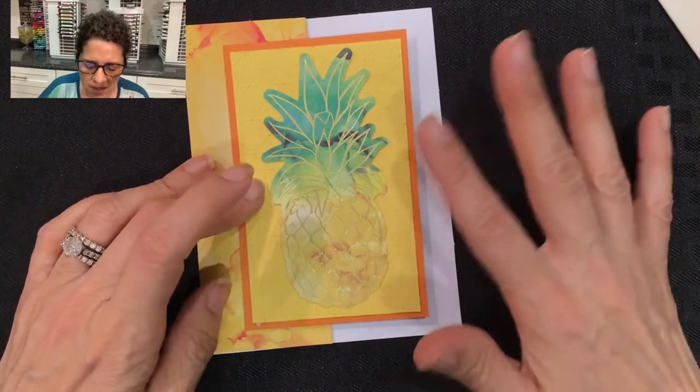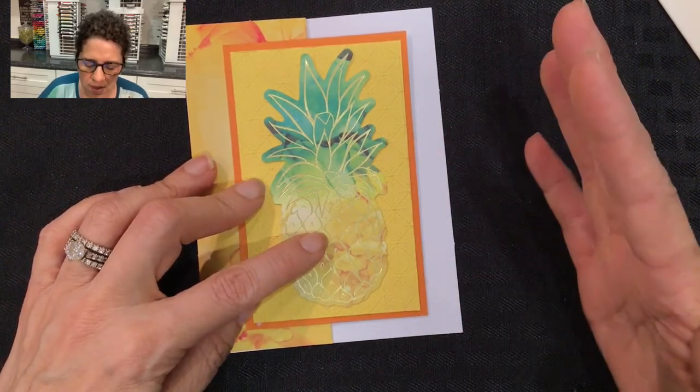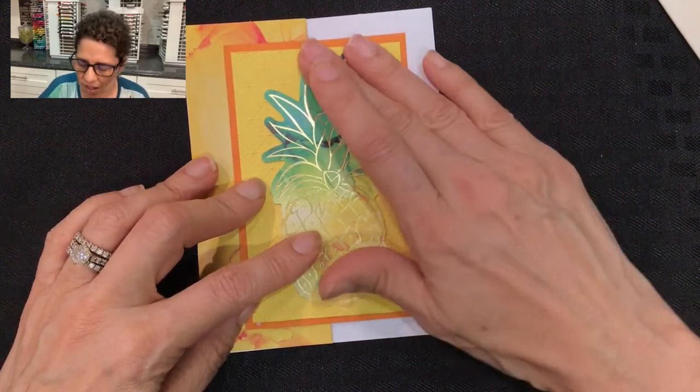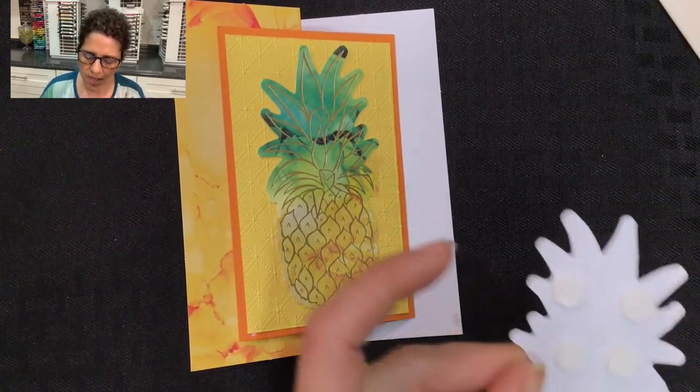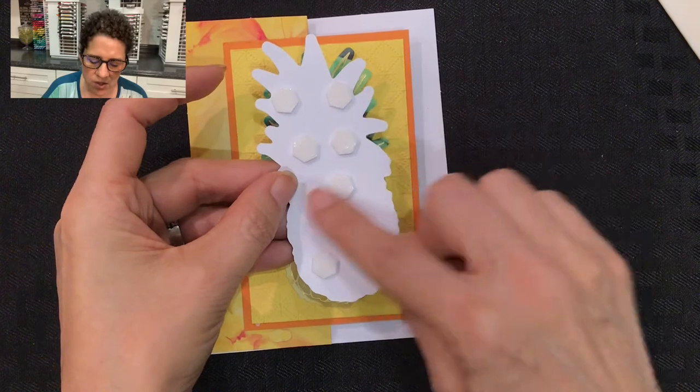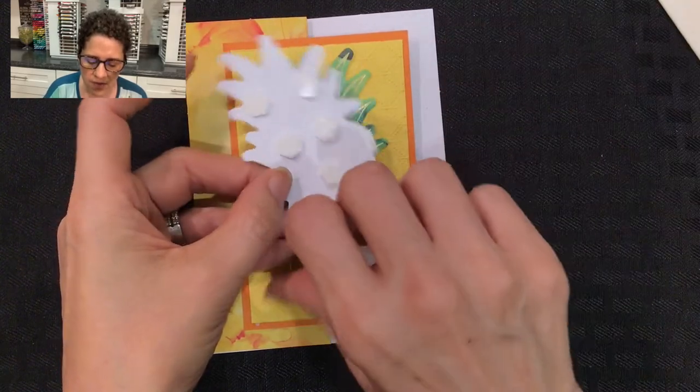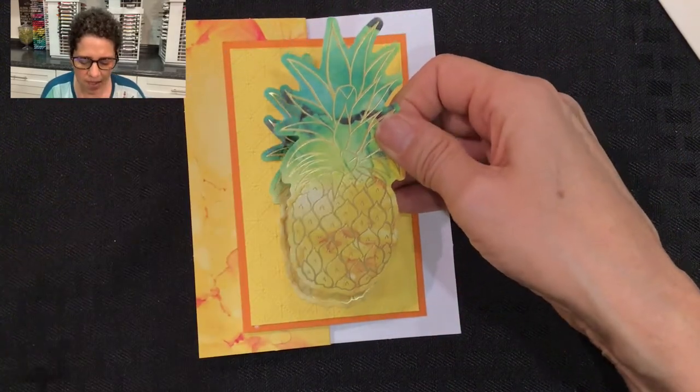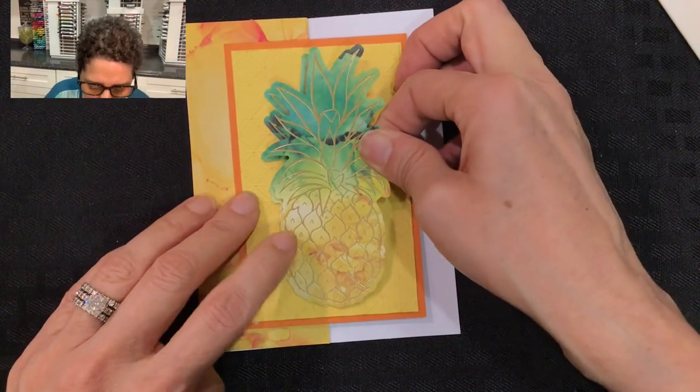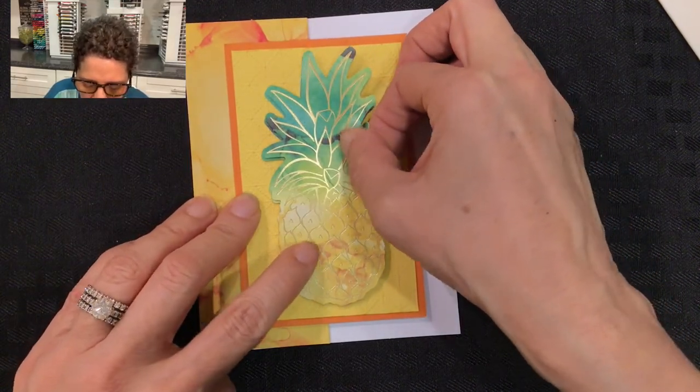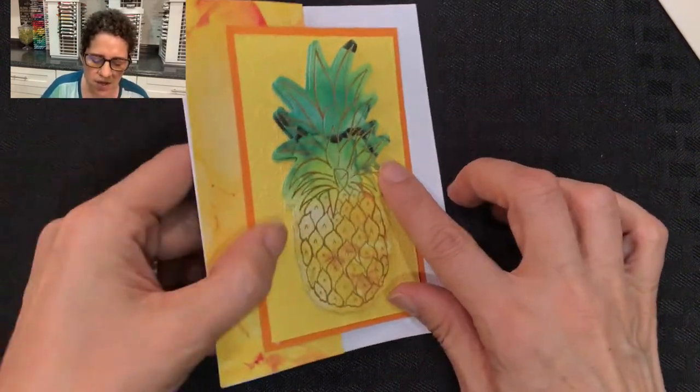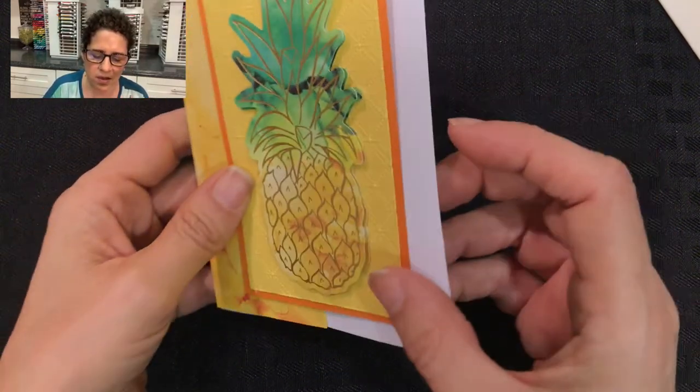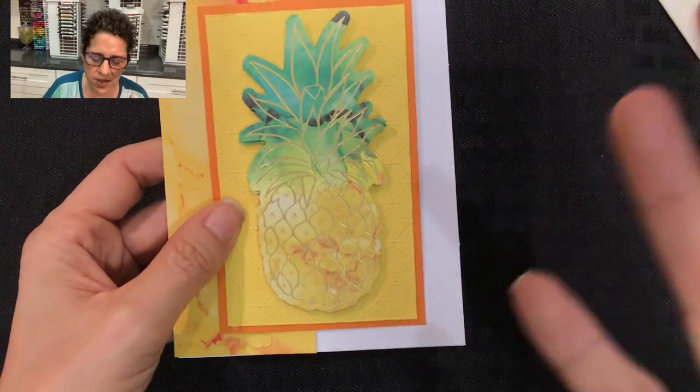Now I wanted to give this pineapple some dimension, so I took the second pineapple and added dimensionals all over the back of it. I took off the backing and now we're going to take the second pineapple and line this up directly on top of that first pineapple. You can see just by putting them on top of each other it really gives a nice look to the front of this card and that pineapple really stands out and pops.